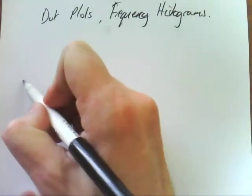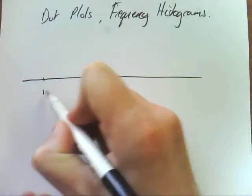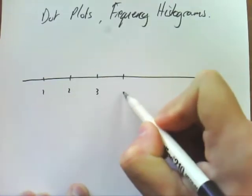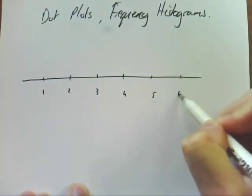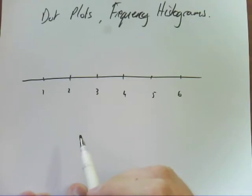Dot plots and frequency histograms. A dot plot is the simplest plot you can draw. So they look something like this. They're only used for relatively small sets of data, so you won't see a dot plot for 3,000 pieces of data.